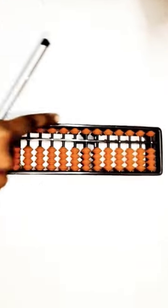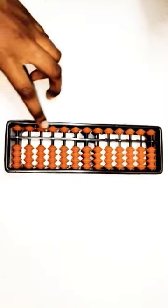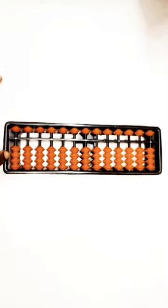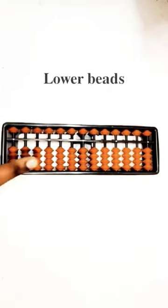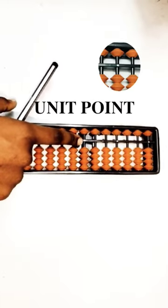The rectangular structure is called the frame. These beads are called the upper beads, and these beads are called the lower beads. This white point is called the unit point.